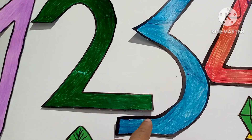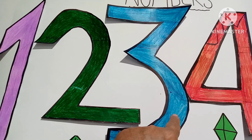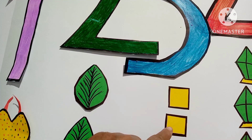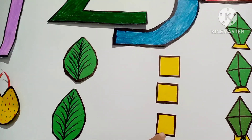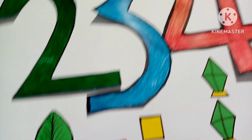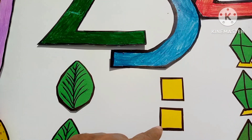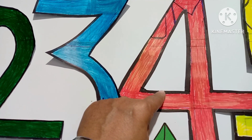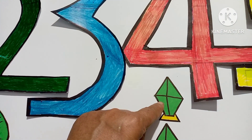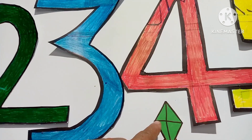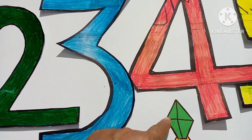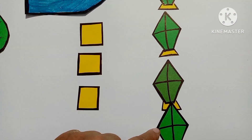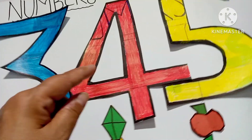Number three. This is number three. One, two, three. There are three squares. Number four. This is number four. One, two, three, four. There are four kites.